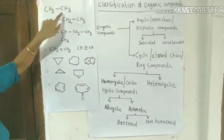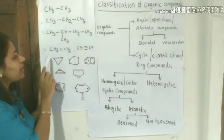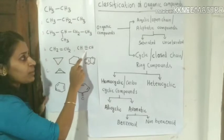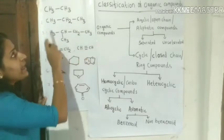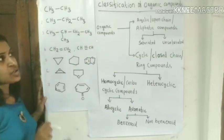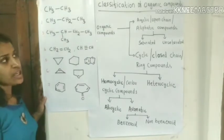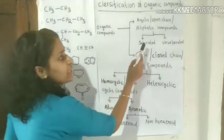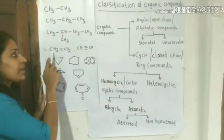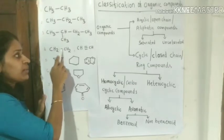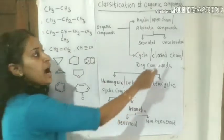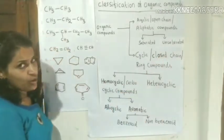Carbon atoms are connected through single covalent bonds. In some examples, we have double bonds and triple bonds. Straight chain compounds where carbon atoms are connected through single bonds are known as saturated organic compounds. When carbon atoms are connected through double or triple bonds, those acyclic or open chain compounds are known as unsaturated organic compounds.